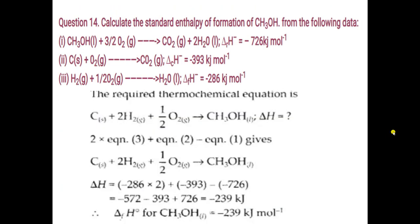Question number 14: calculate the standard enthalpy of formation of methanol from the following data. Three equations and their enthalpy values are given. We have to get the formation equation of CH₃OH. Methanol is formed by carbon, hydrogen, and oxygen. The aim is: C + 2H₂ + ½O₂ → CH₃OH, and we have to find ΔH for this reaction using the three given equations by adding or subtracting them.